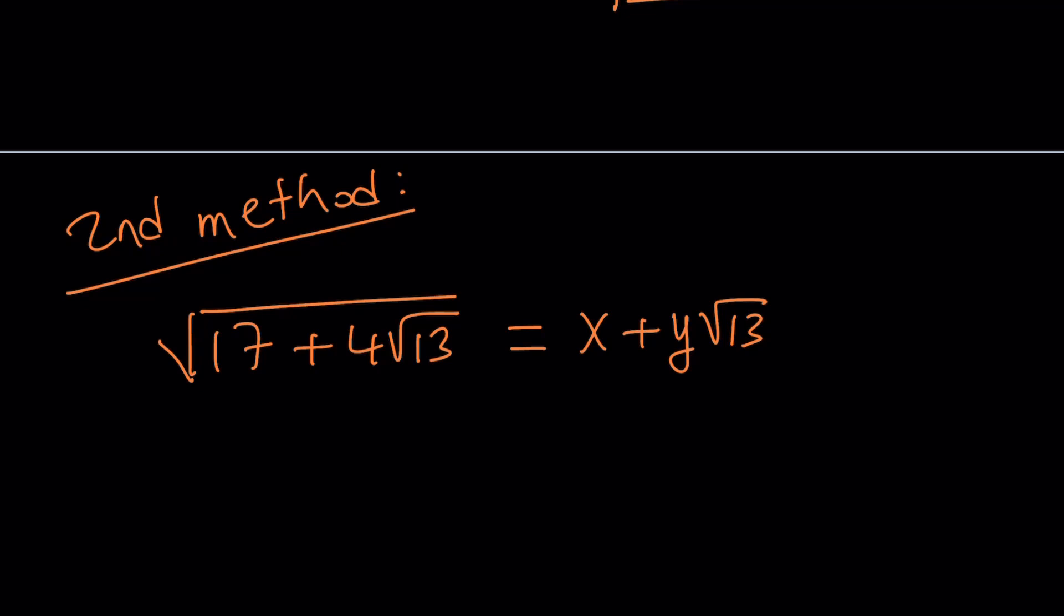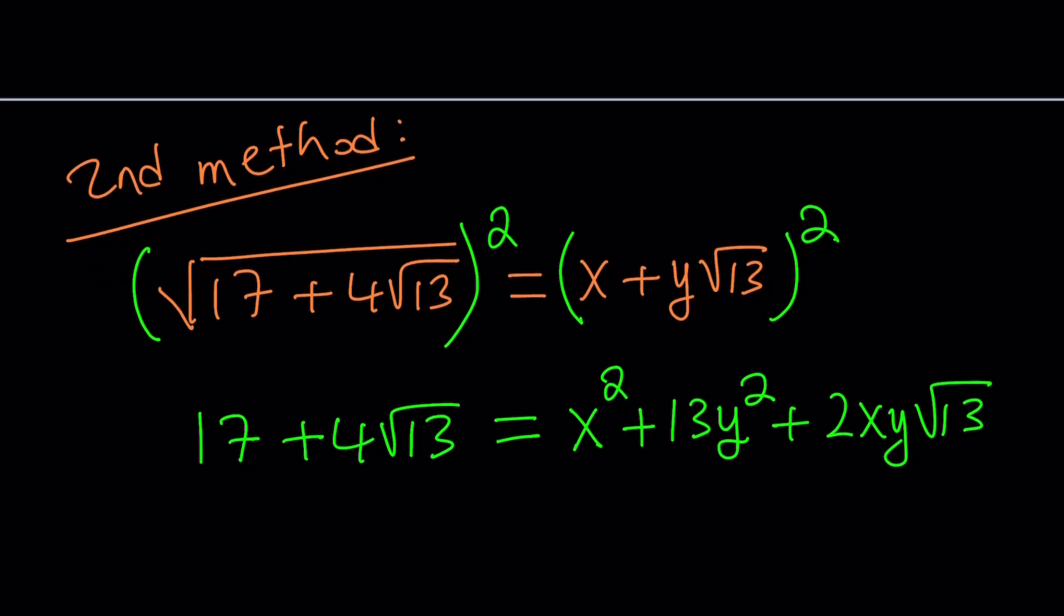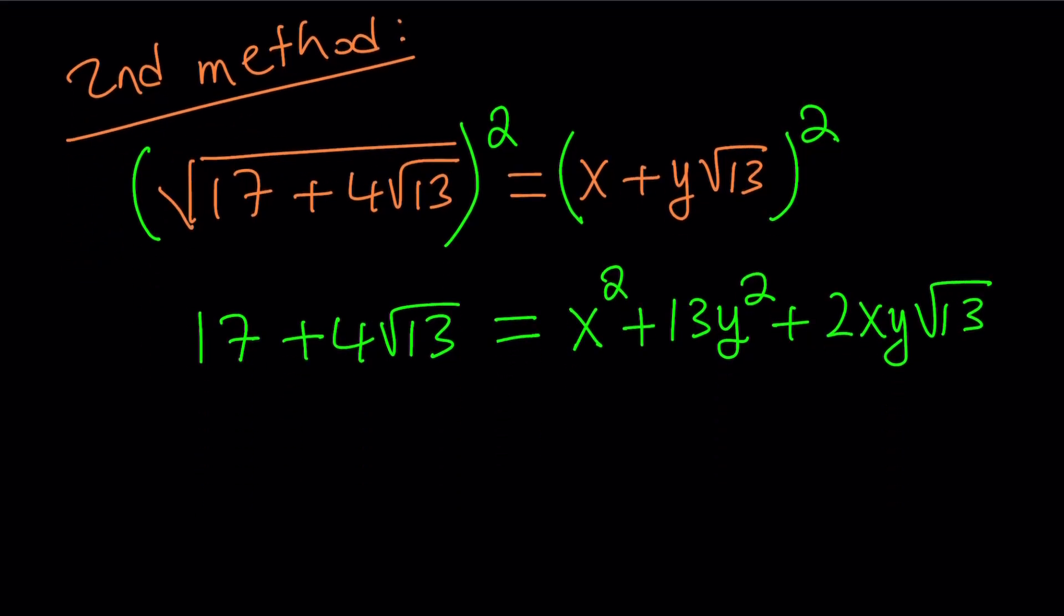So I'm going to square both sides. So we get an equation like this. Do you like it? Hopefully you do. So from here, we get the following. The radical part equals the radical part, so kind of like polynomials. So we can basically say that, hey, this is supposed to be 4, and this is supposed to be 17.